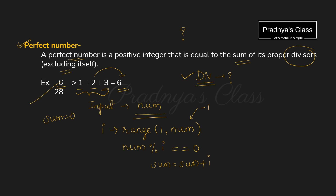Now let's do the task of comparing them. If the sum is equal to the original number, then it will be a perfect number. Otherwise, it will not be a perfect number. Hope you understood the logic — now let's code it.